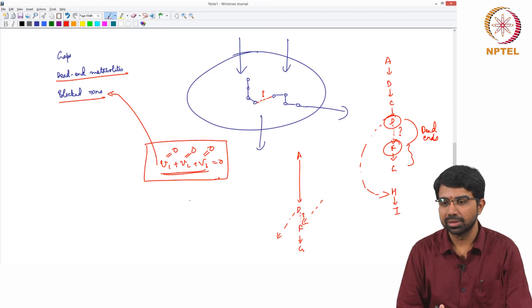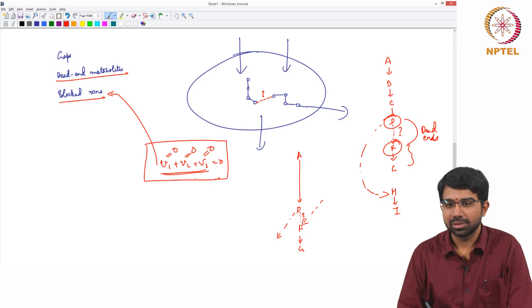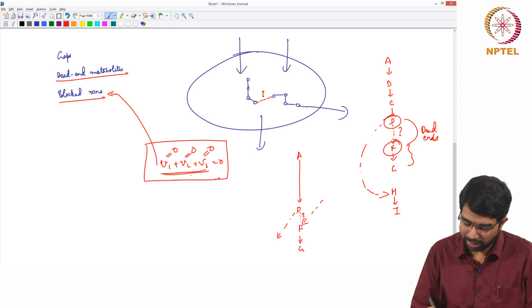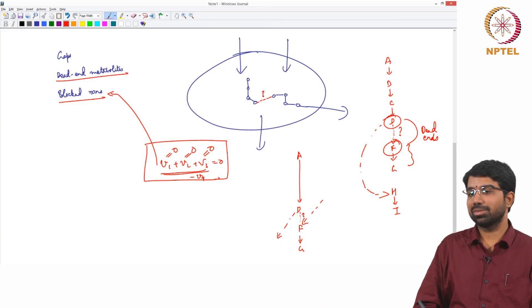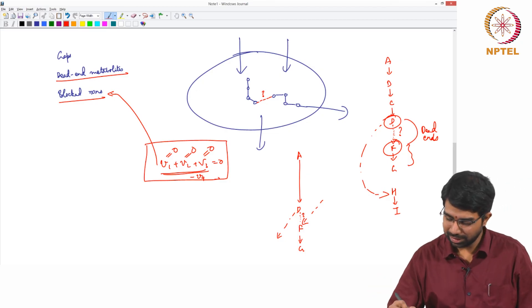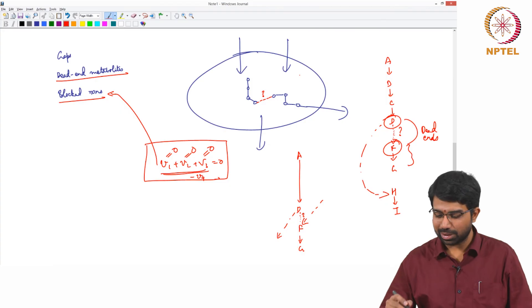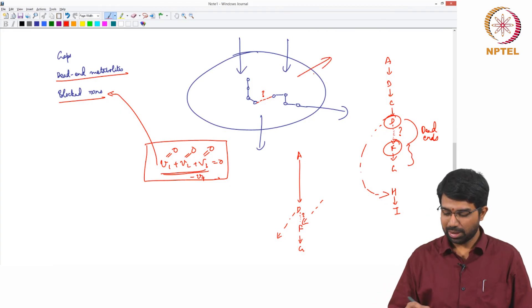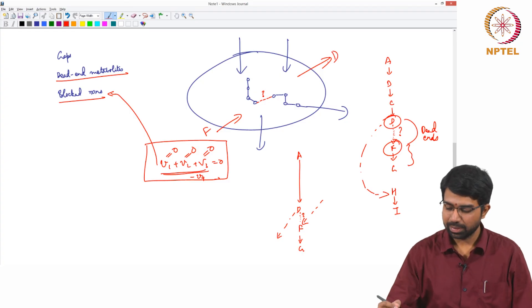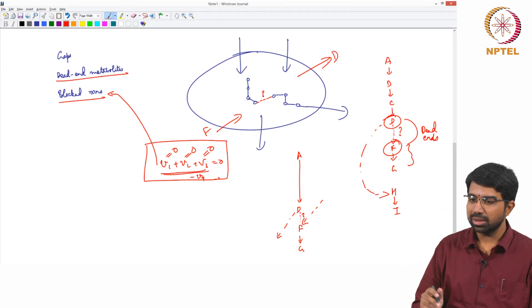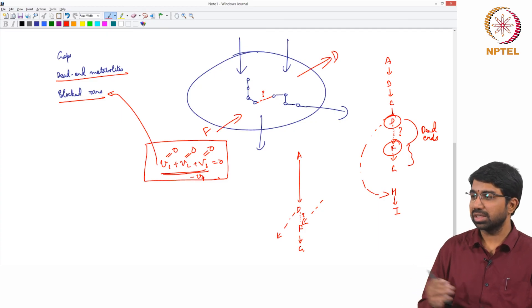How would you fix this, what is a simple way to fix this? If you have an equation like this which is giving you trouble, a simple way to fix it would be to add minus V4 meaning what does it mean? This is mathematically, what does it mean model wise? Some exchange flux. You just now you have this D giving you trouble, take D out. You have F giving you trouble, give some F. This should take care of it. So these are sources and sink reactions, sink and demand reactions.